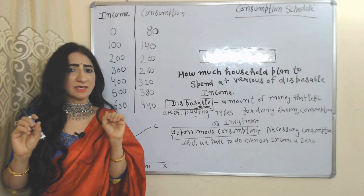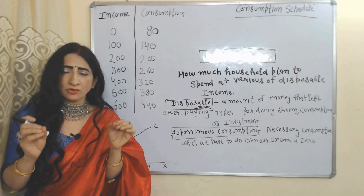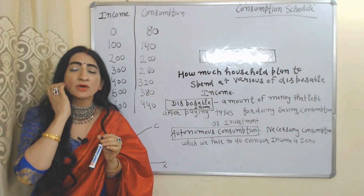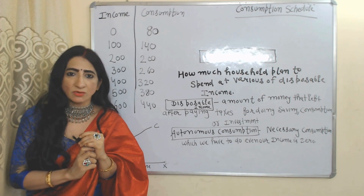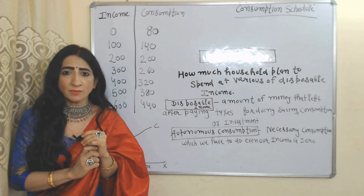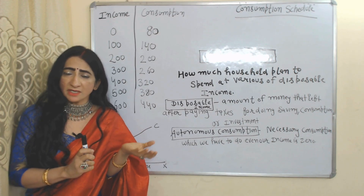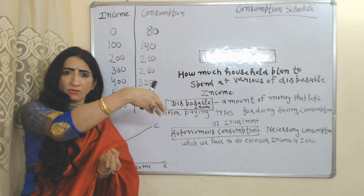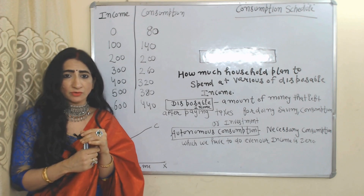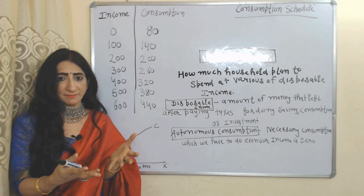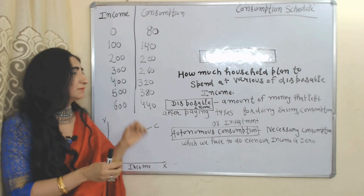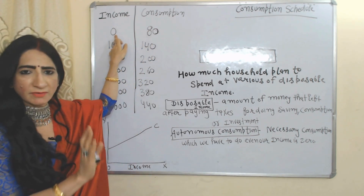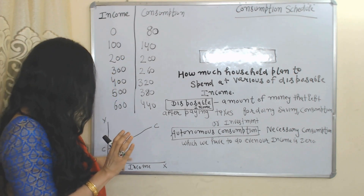Autonomous consumption is the necessary consumption which we have to do even when our income is zero. For example, we have to buy food even when our income is zero. We either use our past savings or borrow money from someone, but we have to buy food for survival. So consumption on food is called autonomous consumption — which we must do even when our income is zero.